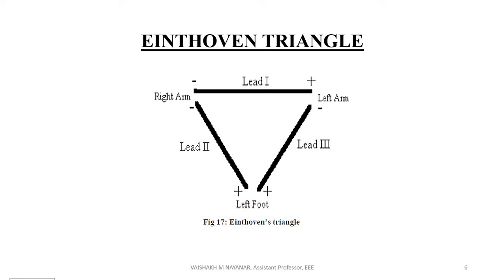So, the relationship between Einthoven's triangle leads: in Lead 1, the right arm is connected to the negative terminal of the differential amplifier (the inverting terminal) and the left arm is the non-inverting terminal. In Lead 2, the right arm is negative and the left foot is positive. In Lead 3, the left foot is positive and the left arm is negative. We conclude the Lead 1, Lead 2, and Lead 3 measurements from this triangle.